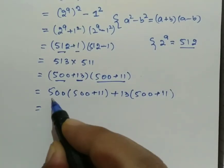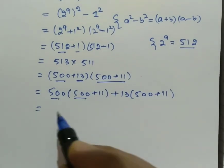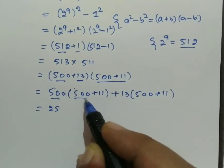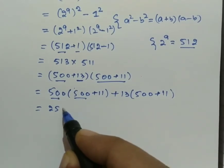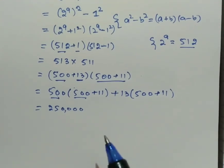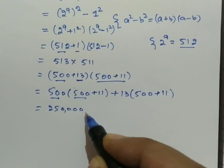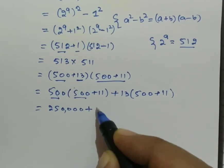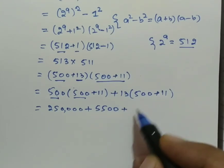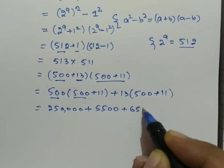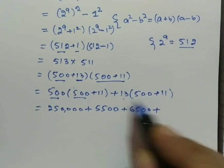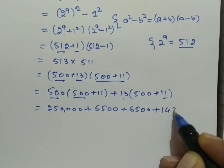The multiplication of 500 and 500: 5 times 5 is 25, then four zeros, so 250,000. 500 times 11 is 5,500. Plus 13 times 500, which is 6,500. Plus 13 times 11, which is 143.